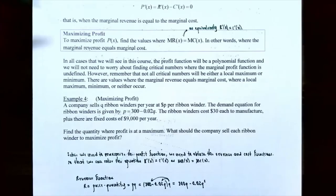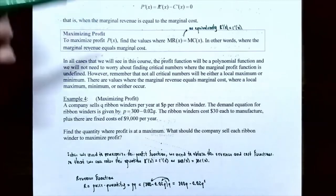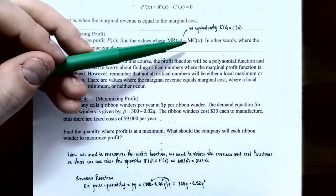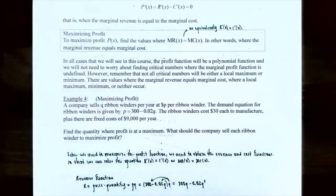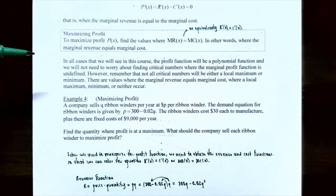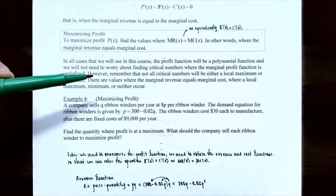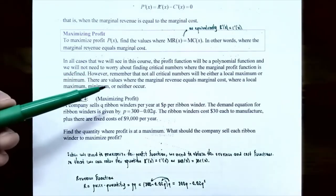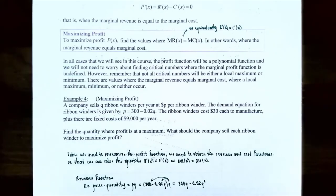So to maximize profit P(x), find the values where the marginal revenue R′(x) is equal to the marginal cost C′(x). In all cases in this course, the profit function will be a polynomial function, so we will not need to worry about critical numbers where the marginal profit function is undefined — only where P′(x) = 0. However, keep in mind that not all critical numbers will be a local maximum or a local minimum.